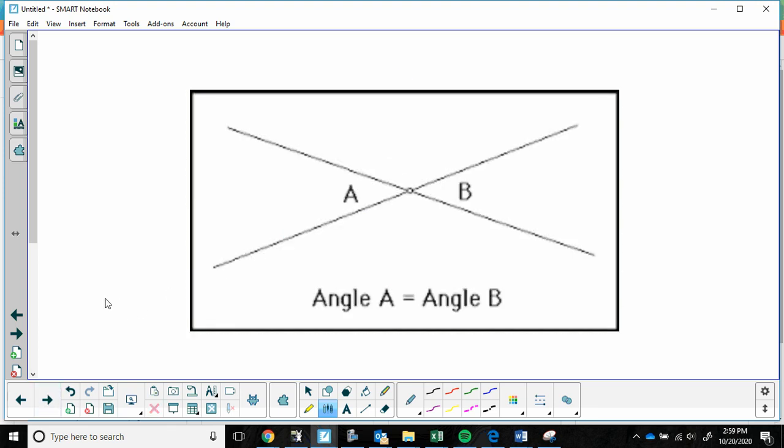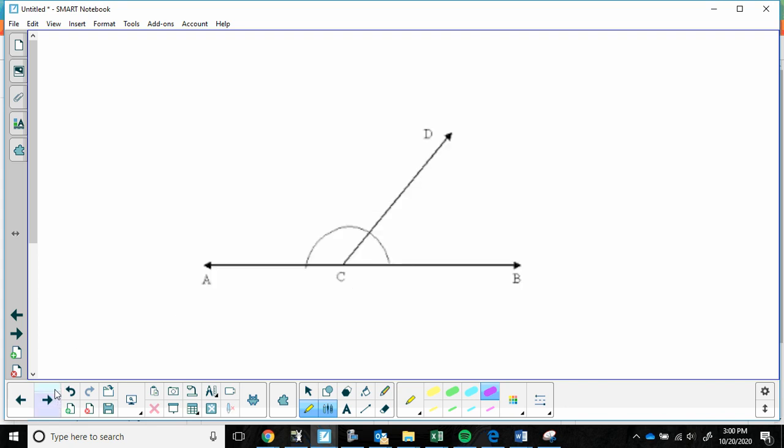Next one. For this one right here, we are focusing on angle A and angle B. What type of angle pair is this? And lastly, we're looking at these two angles right here. This angle and this angle. What type of angle pair are you looking at right now?